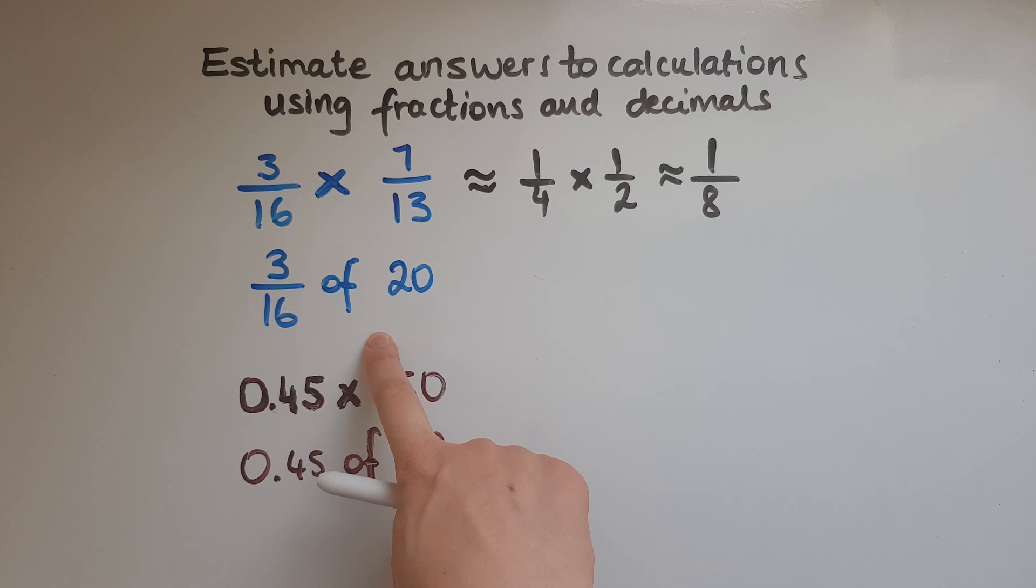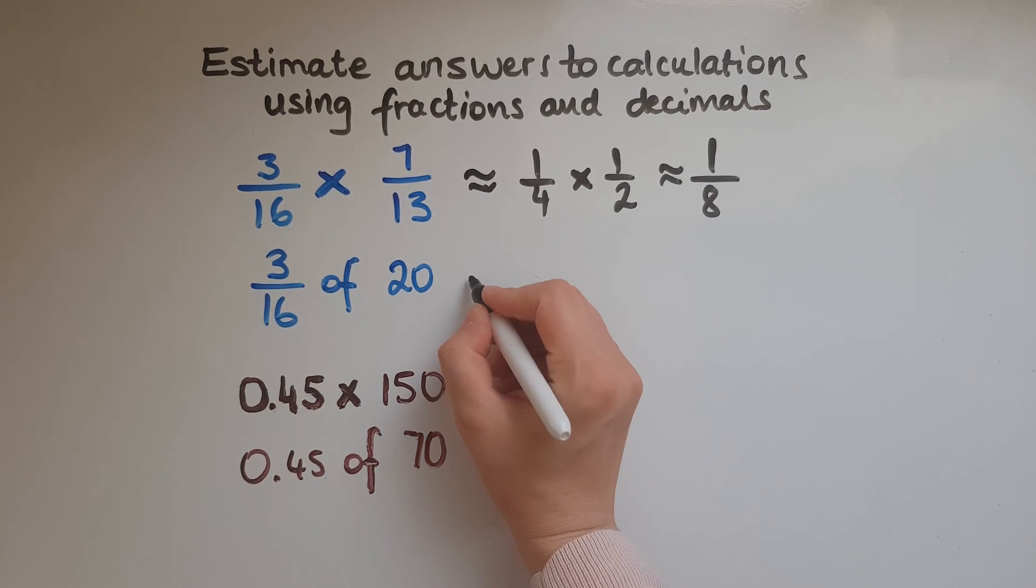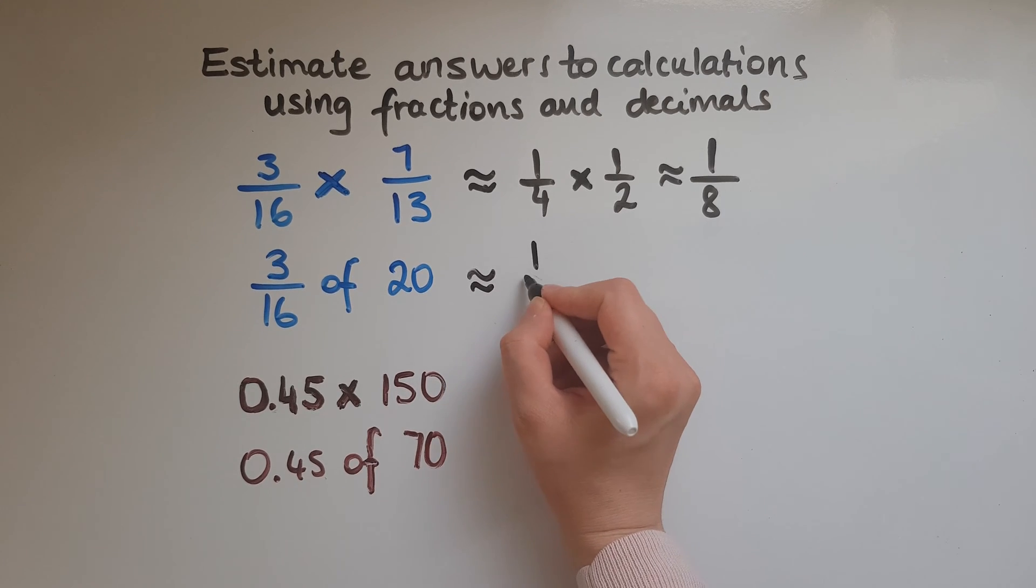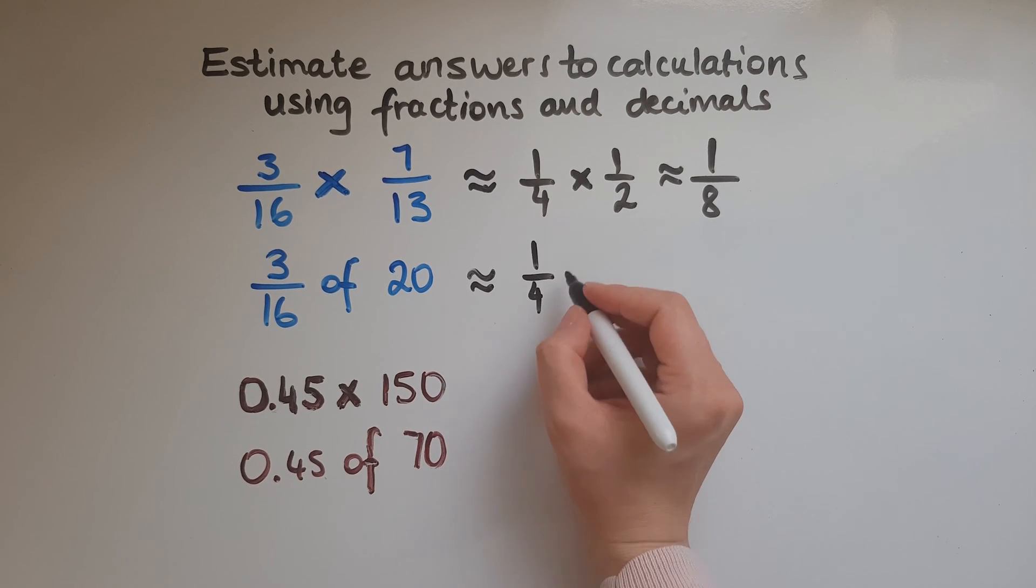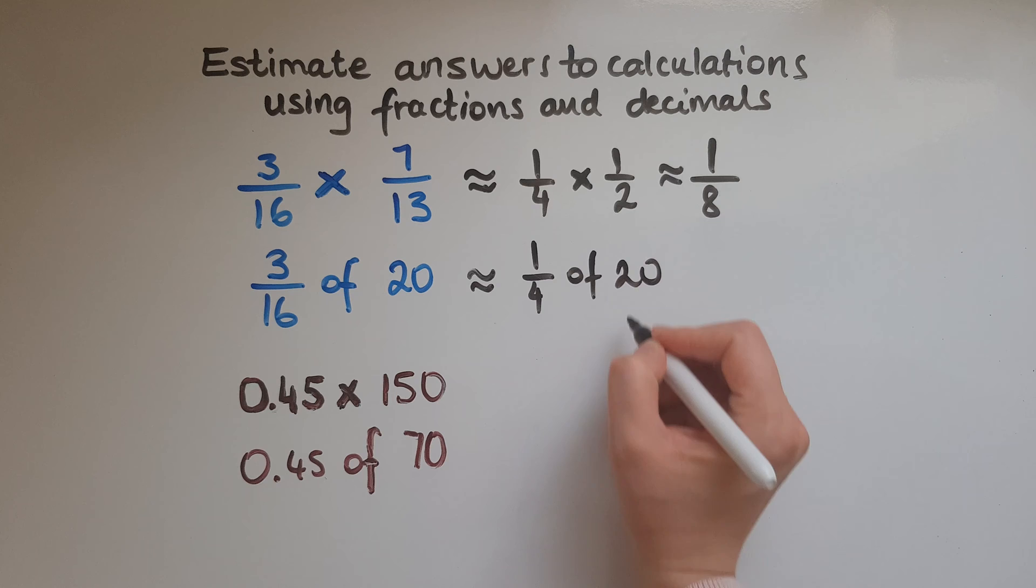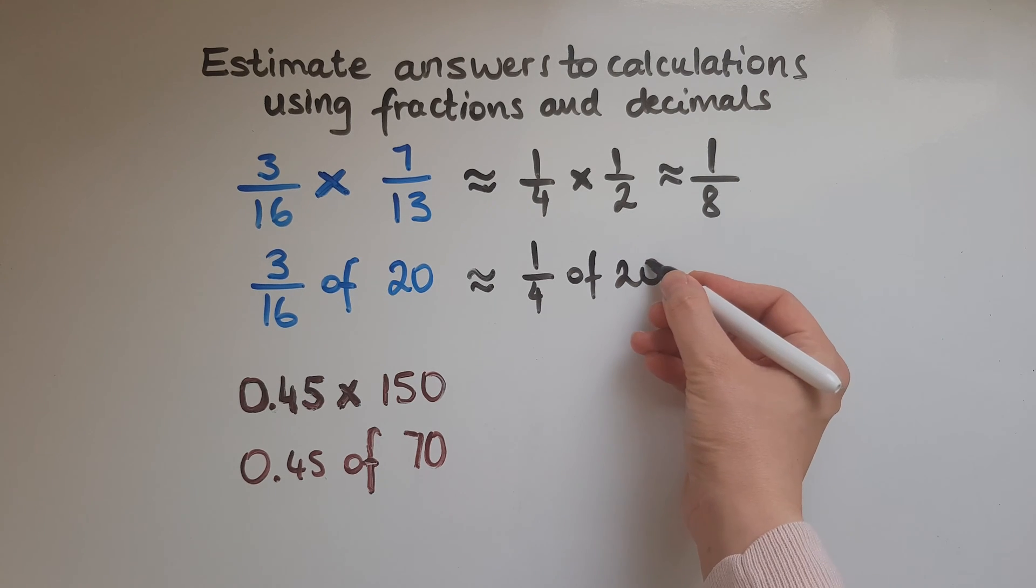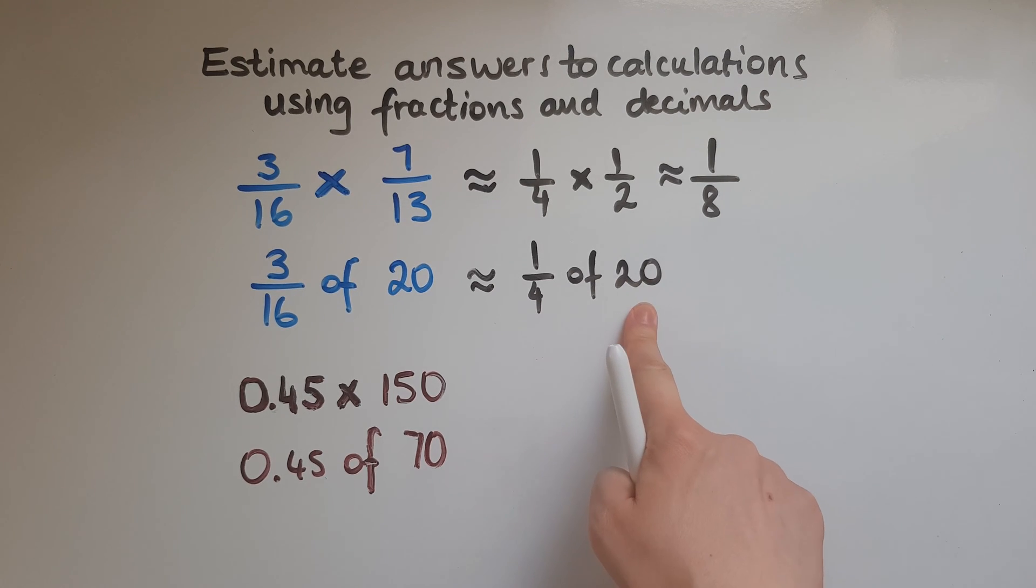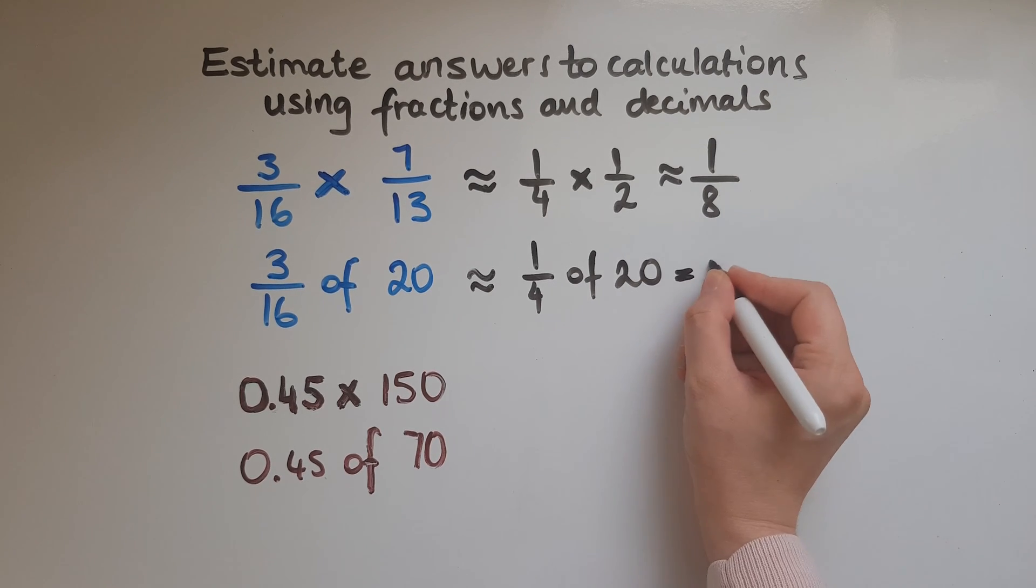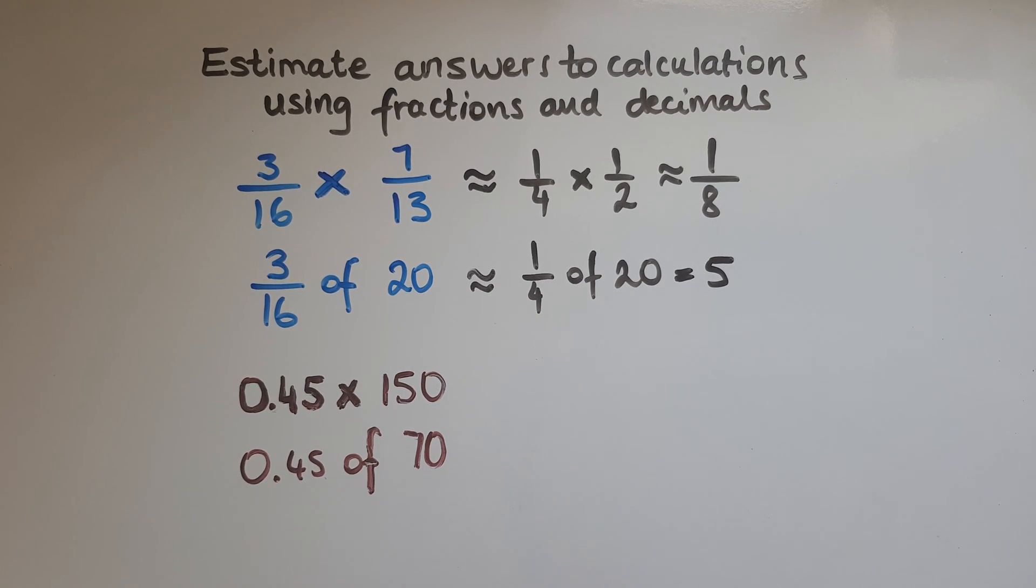And again, I'm going to estimate the answer to this other question. So we've got 3 out of 16, as we said before, so that is close to a quarter. So it's the same as finding a quarter of 20. So what is a quarter of 20? Half of 20, that gives us 10. Half again, that gives us 5. So a quarter of 20 is 5.